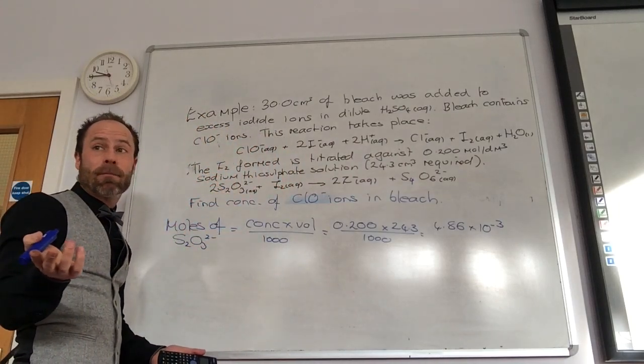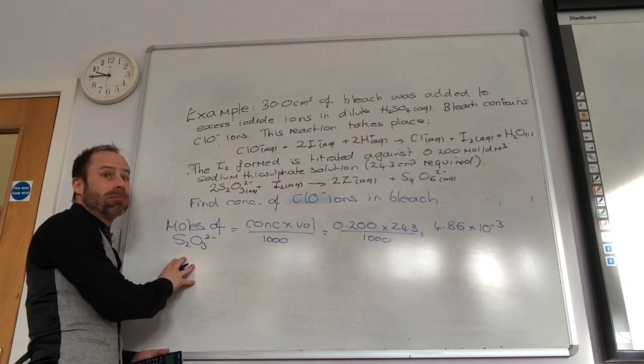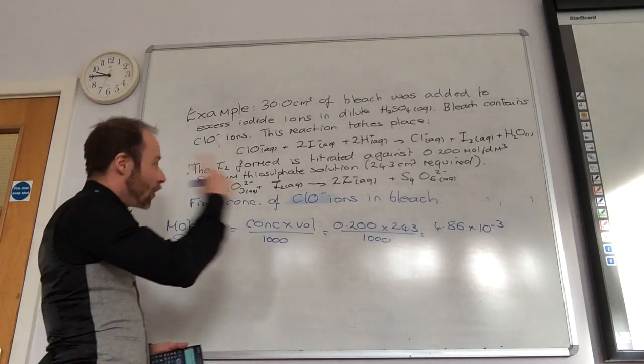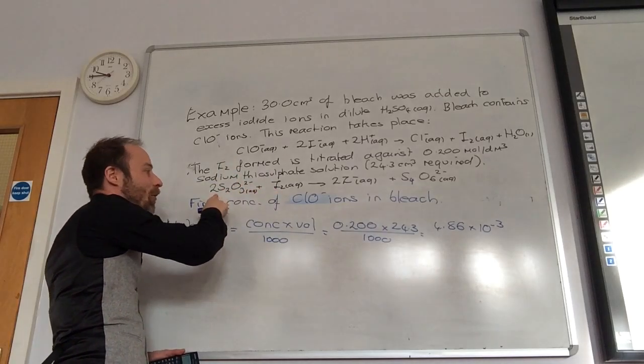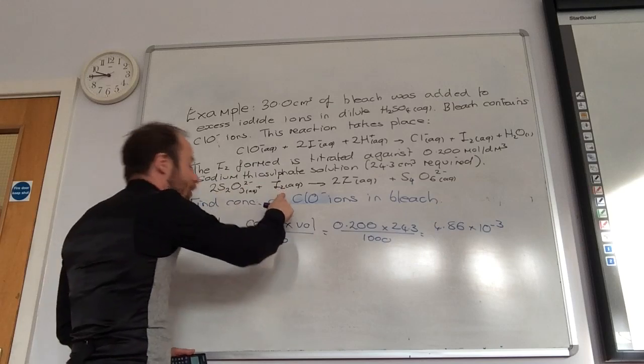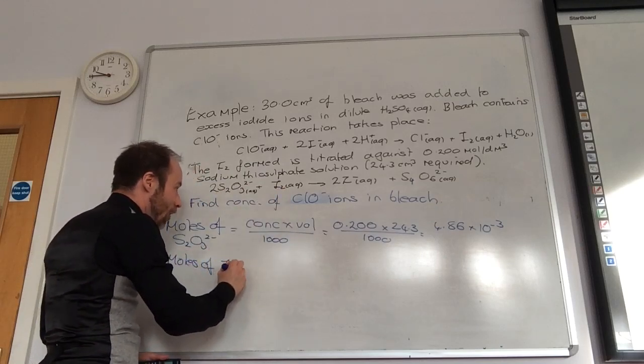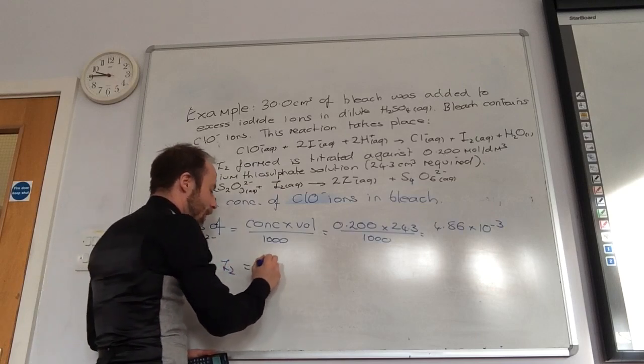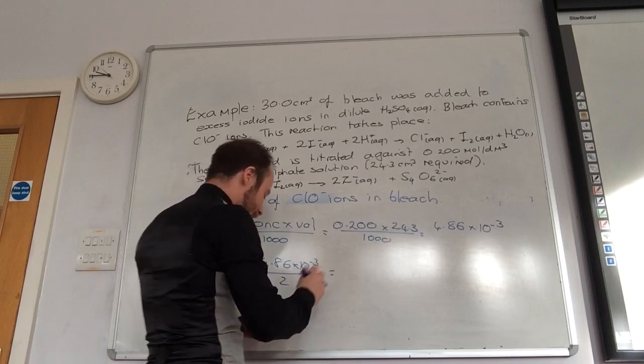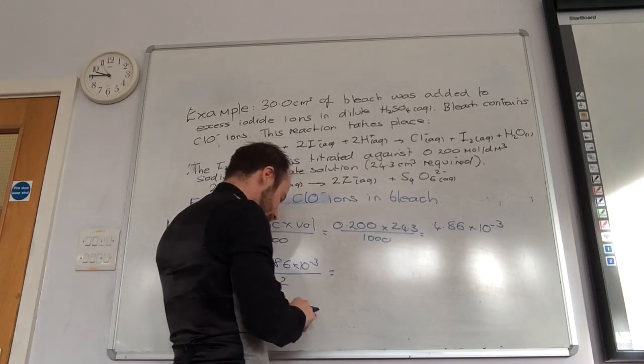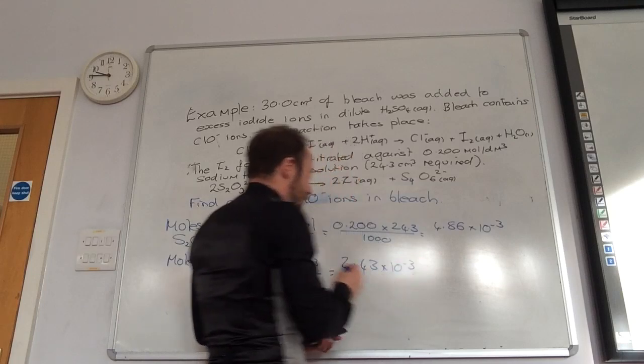Can I pick up a blue pen? Oh, fine. So what would I now do? I've got to work out, for every one of those, how many thiosulfates? Two. So I need to divide by two. So moles of I2 is equal to 4.86 times 10 to the minus 3 divided by two, which is 2.43 times 10 to the minus 3.